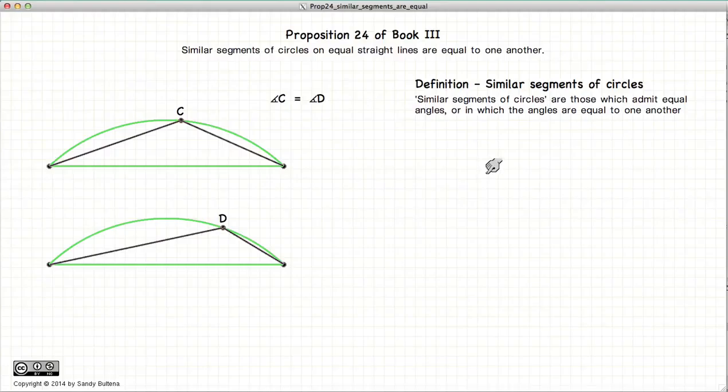But before we begin, I must define what a similar segment of a circle is. If we have two circle segments, which has an angle C and an angle D, then these two segments of circles are similar if the angle C is equal to the angle D. So that is our definition of similar segments of circles.